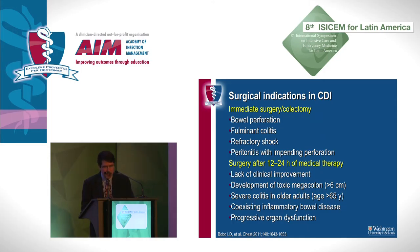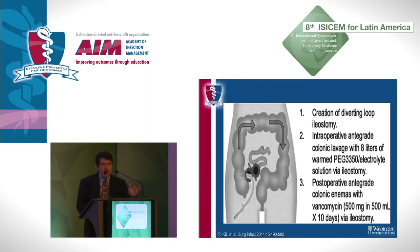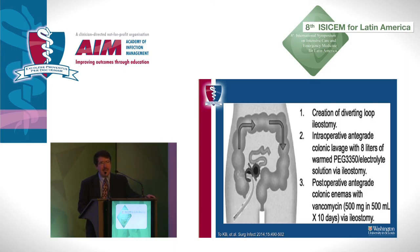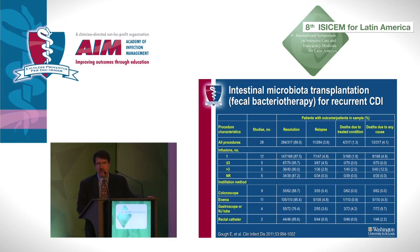Surgical indications are straightforward — bowel perforation, severe fulminant colitis, refractory shock, or peritonitis with impending perforation would all be considered immediate reasons for operation if the patient is an adequate candidate. There are also new techniques that have caught popularity, including placing a cecostomy tube, irrigating out the bowel, and placing vancomycin directly into the large colon. The thing that's created the most interest is the use of fecal transplants — data is looking quite good, and it's becoming more utilized in patients with refractory problems, more so in the outpatient setting than inpatient, although that will likely come as well.